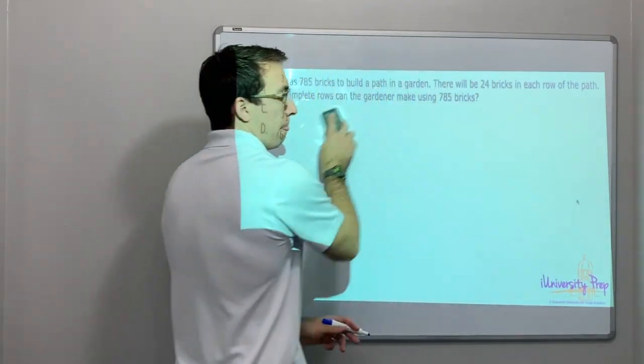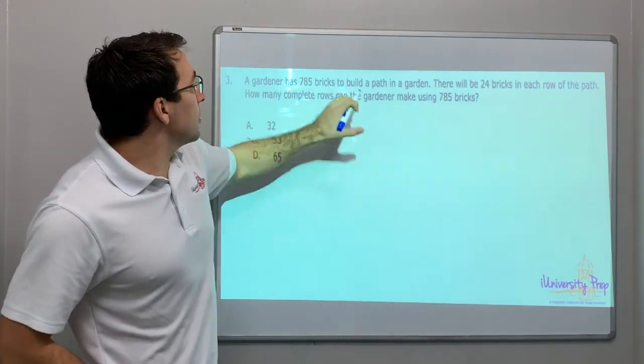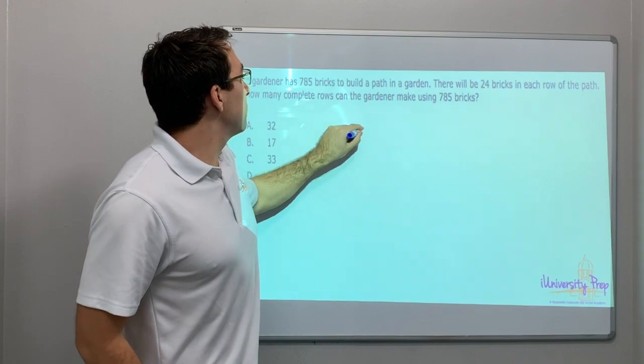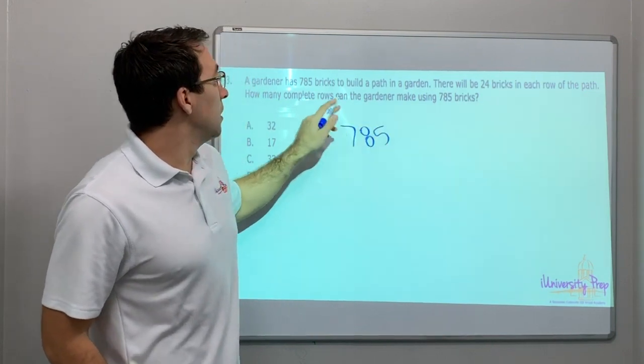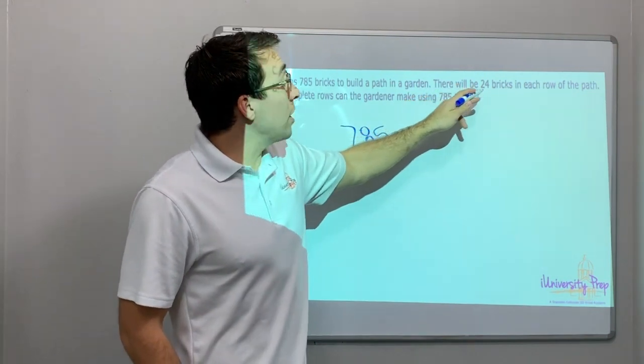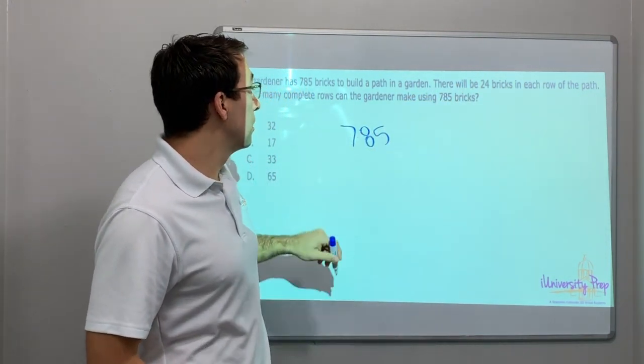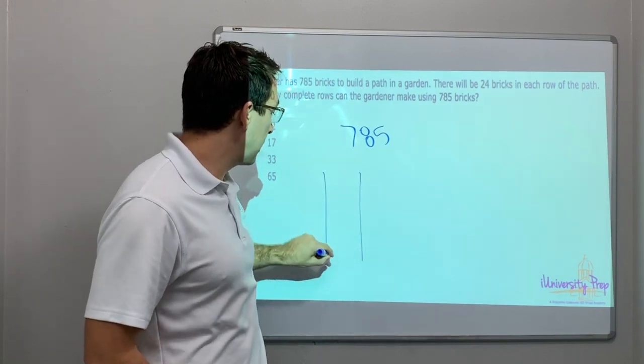Last question for this video, and then we'll get the rest of the questions next video. A gardener has 785 bricks to build a path in a garden. So here's the path.